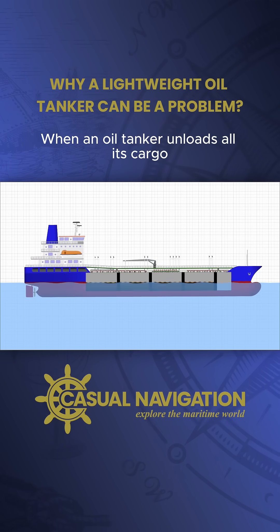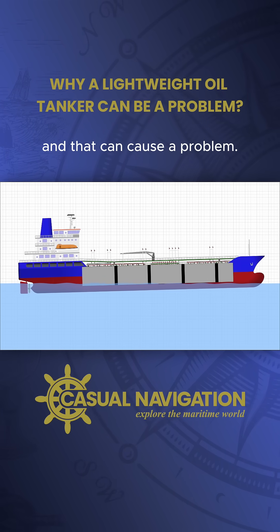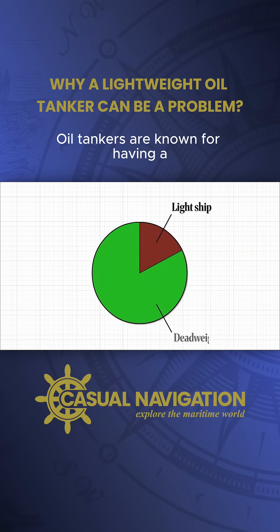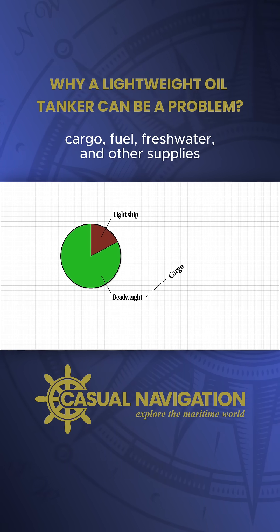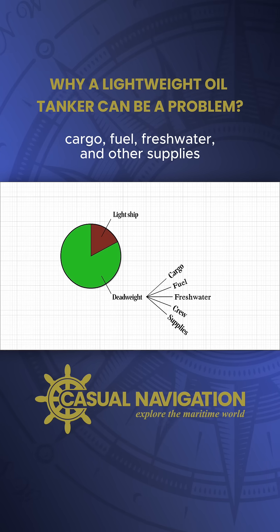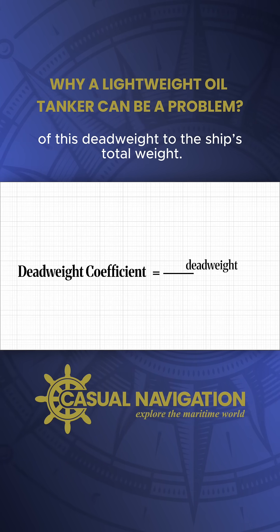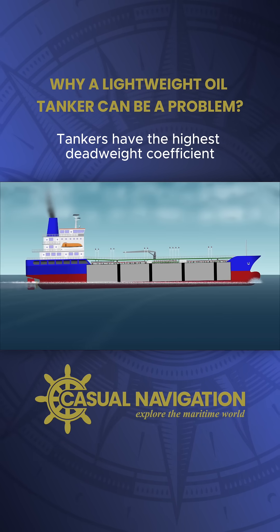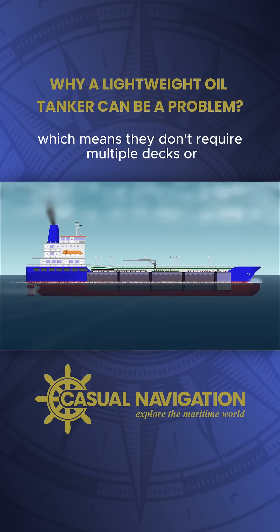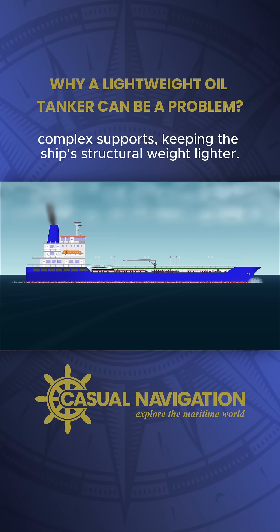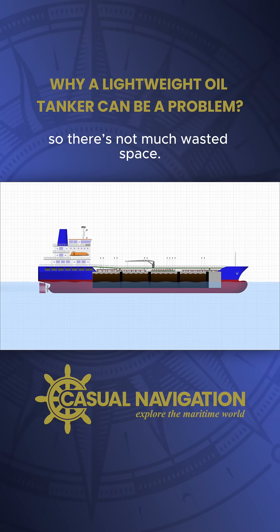When an oil tanker unloads all its cargo and has nothing to carry back, it becomes significantly lighter, and that can cause a problem. Oil tankers are known for having a high deadweight coefficient. Deadweight is basically everything the ship carries — cargo, fuel, fresh water, and other supplies — except for the ship's permanent structure and machinery. The deadweight coefficient is the ratio of the deadweight to the ship's total weight. Tankers have the highest deadweight coefficient of any ship because they store liquid cargo in tanks, which means they don't require multiple decks or complex supports, keeping the ship's structural weight lighter. The cargo is also uniform and packs efficiently, so there's not much wasted space.